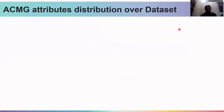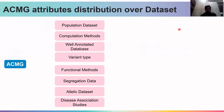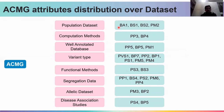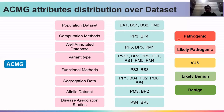The ACMG attributes are distributed over different datasets and methods. For the population dataset, there are four ACMG attributes: BA1, BS1, BS2, and PM2. For computational methods, there are two attributes. Based on these, a variant is classified into five categories: pathogenic, likely pathogenic, VUS, likely benign, or benign.